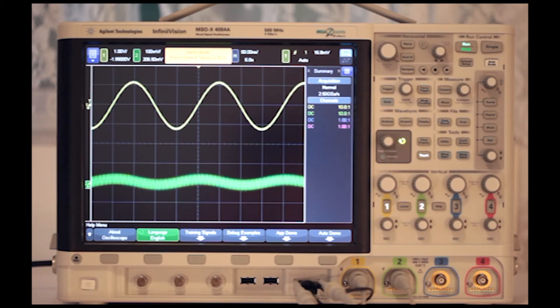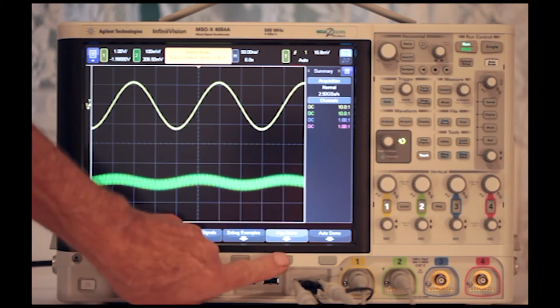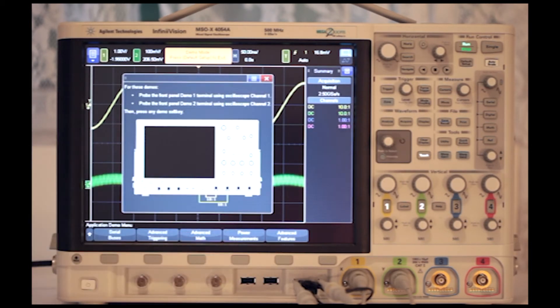We'll look at the App Demo. The subcategories, each having a corresponding soft key along the bottom of the display, are Serial Bus, Advanced Triggering, Advanced Math, Power Measurements, and Advanced Features.